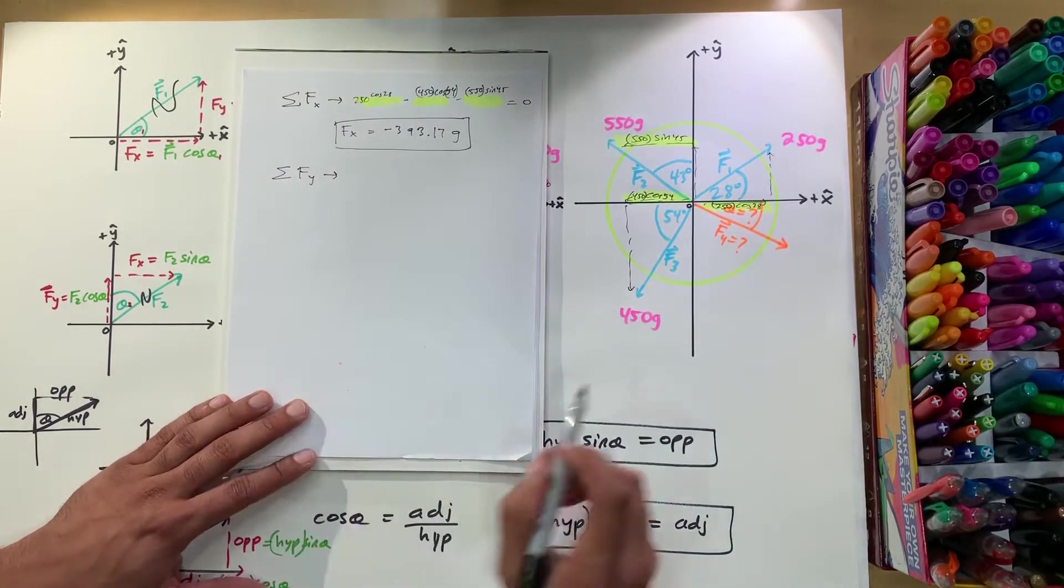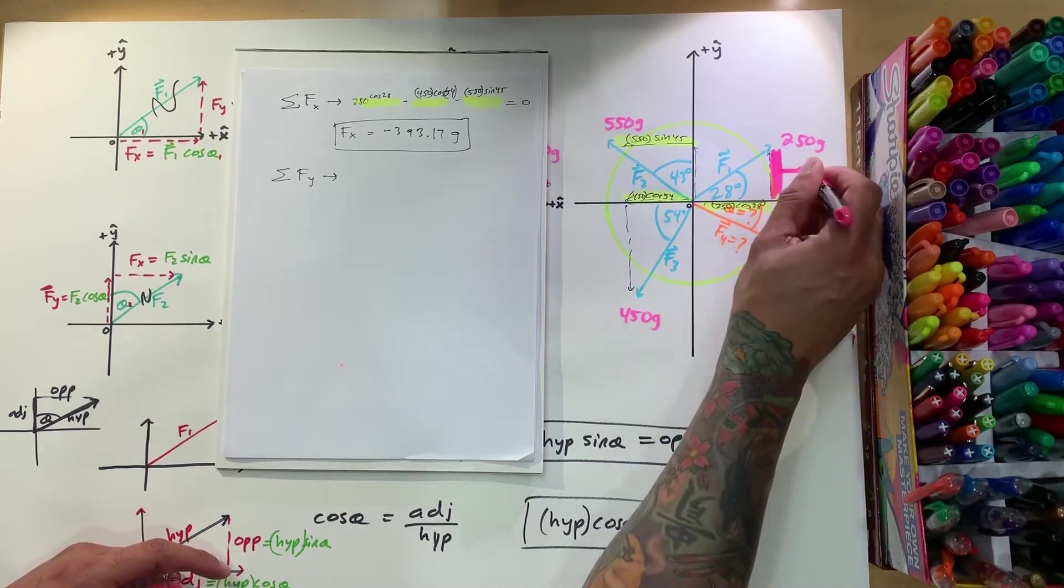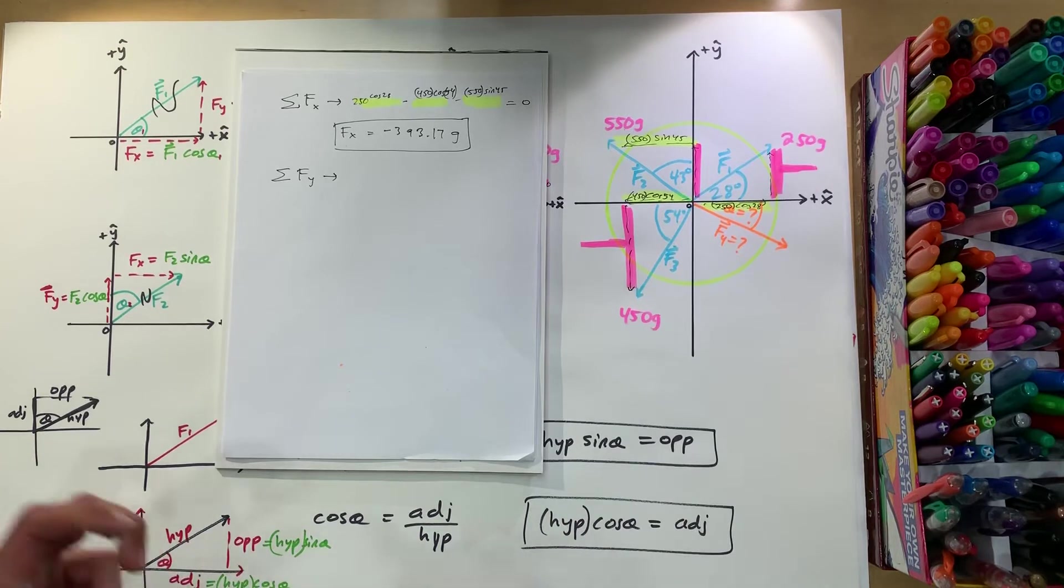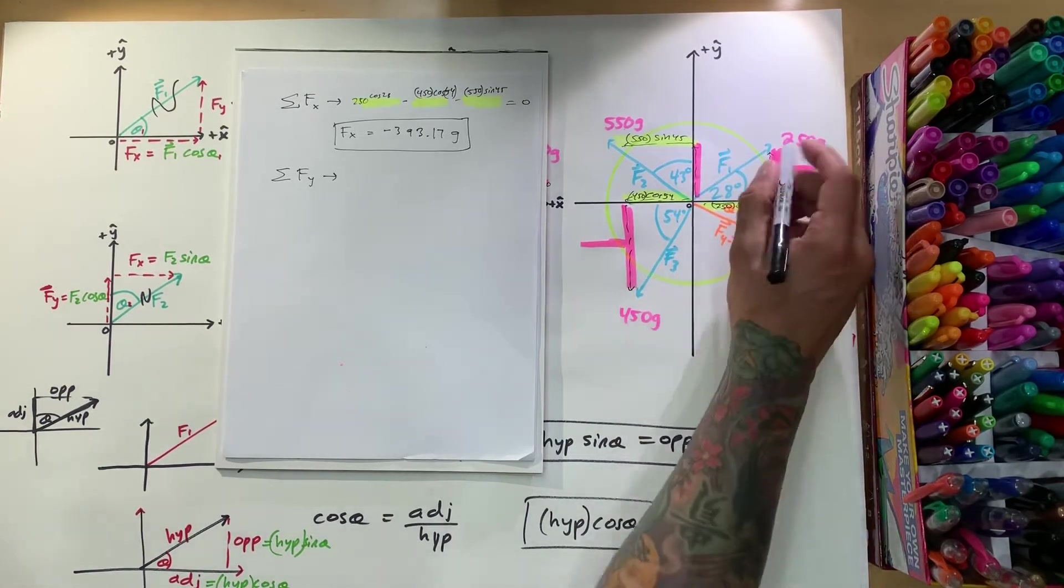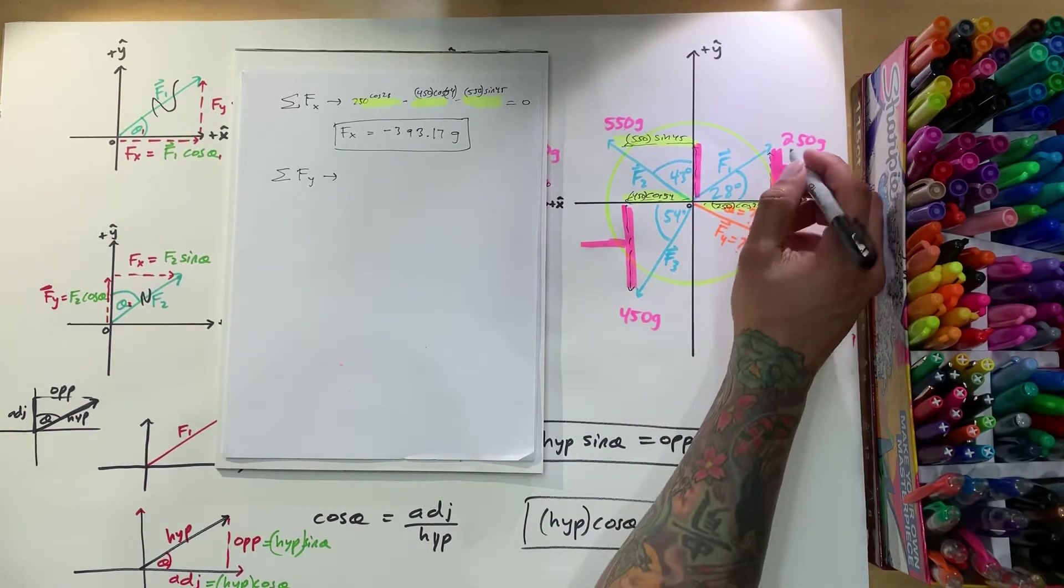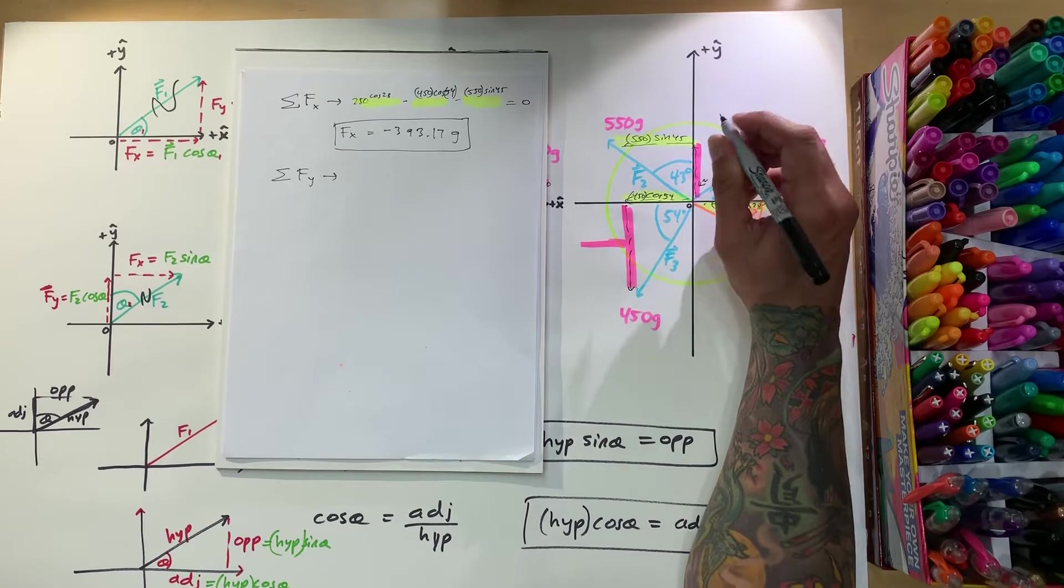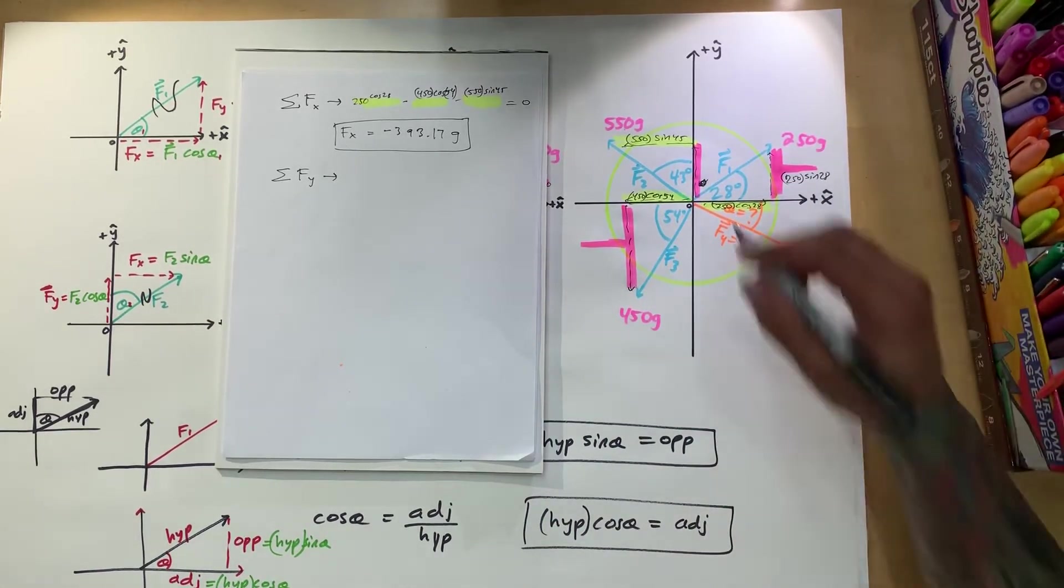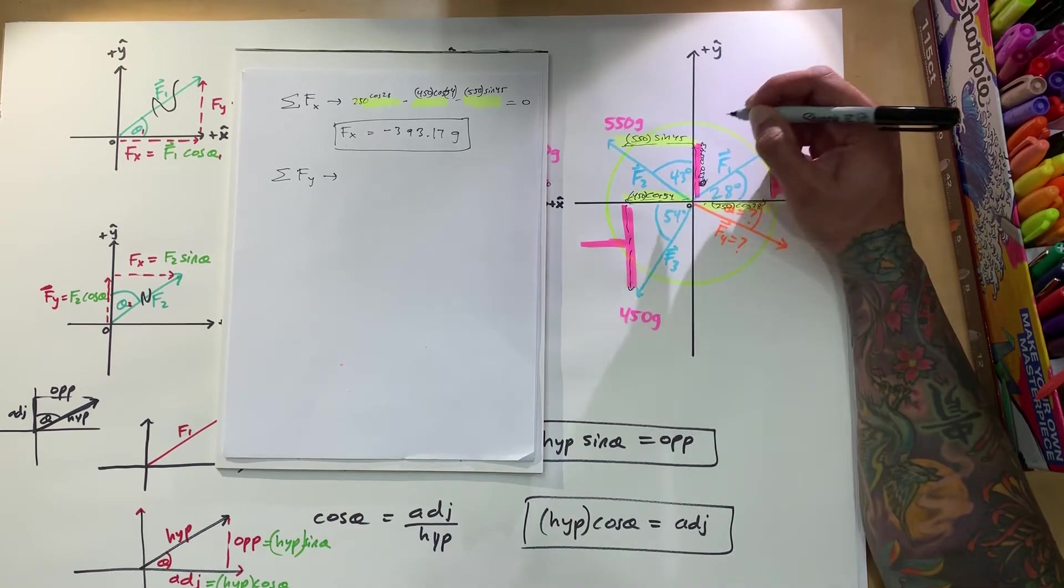Now our sum of forces in the y direction. Alright, let's use, we can use pink. And we got this here. Okay, which I'll write sideways too. We got this here. Okay, we can write there. And we also have this here. Alright, so now let's write that in. Alright, so now let's do, this one here is going to be opposite over hypotenuse. So we got 250 times the sine of 28. Okay. And then here we got adjacent over hypotenuse. So I'm going to write that sideways. That's going to be F2. Adjacent is cosine. I'm sorry. F2 is equal to 550. So let's write. Hold on a second. Let's write 550 times cosine of 40. Is that 3?